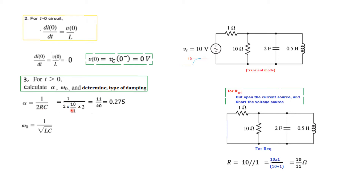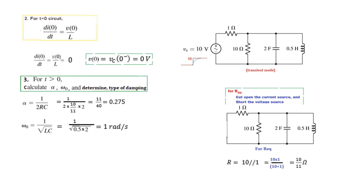Plugging in the values of inductance and capacitance into omega_0 equals 1/√(LC) gives omega_0 equal to 1 radian per second. Since alpha (0.275) is less than omega_0 (1), this is a case of underdamped oscillation. We will apply the formula for the underdamped case.